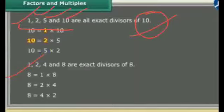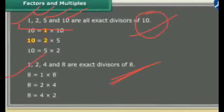Same here, 1, 2, 4 and 8 are factors of 8. They are factors which completely divide 8 with no remainder. So 1, 2, 4 and 8 are factors of 8.